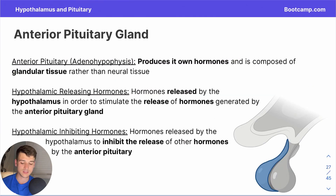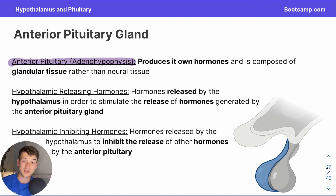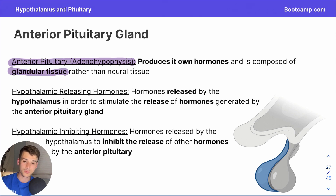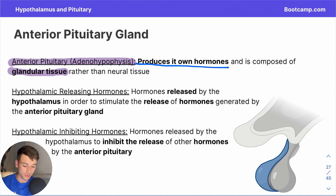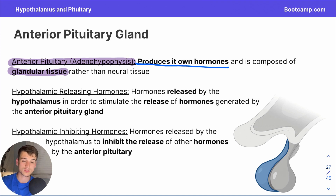That was the posterior pituitary gland. Now let's move on to the anterior pituitary gland, also known as the adenohypophysis — the prefix adeno referring to glands, since the anterior pituitary is constructed of glandular tissue rather than neural tissue. The most important distinction is that the anterior pituitary produces its own hormones, a function made possible by its glandular tissue composition. However, it still relies on the hypothalamus to be stimulated to release those hormones.